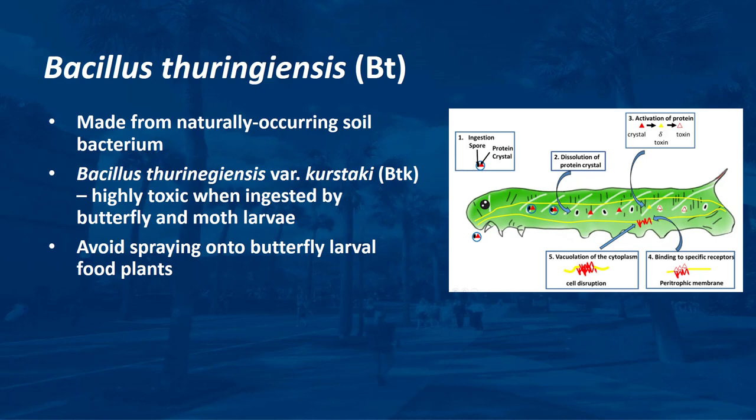Products containing Bt are made from a naturally occurring soil bacterium. Many different Bt products are available for landscape professionals and homeowners. Different strains of Bt target specific pest groups, making them selective pesticides. For example, spores and crystals of Bacillus thuringiensis variety kurstaki are highly toxic when ingested by butterfly and moth larvae. The crystals containing the toxin dissolve only in the extremely high pH found in the caterpillar's gut. Btk is not toxic to bees. However, avoid spraying or allowing spray to drift onto favored food plants of caterpillars such as milkweed, the primary food source for monarch butterfly caterpillars.